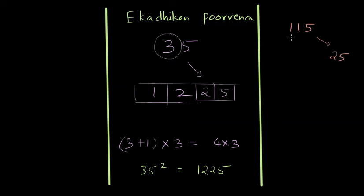And then what we will do is multiply 11 with 12, because 12 is the next number for 11, and the multiplication of 11 and 12 is 132. We just put 132 on the left-hand side of 25, and that is the square of 115.